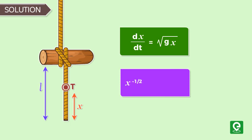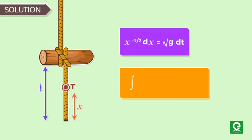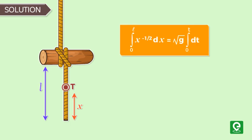Let's integrate both sides. Integration from 0 to l of x raised to the power minus 1 by 2 dx equals square root g times integration from 0 to t dt. Solving this, we get 2 times square root l equals square root g times t.